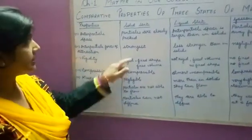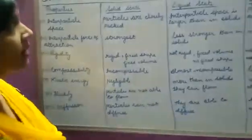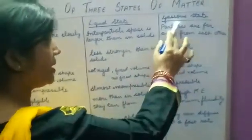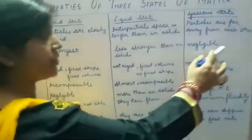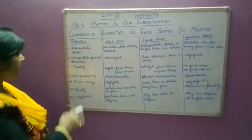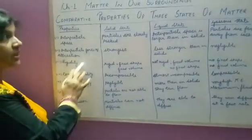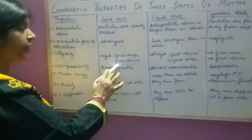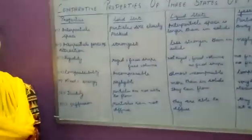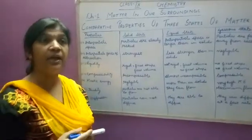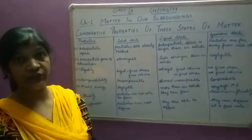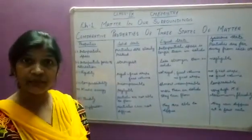The second property is inter-particle force of attraction. It is the strongest in solid state. In liquid state, it is less strong than in solids. In gaseous state, inter-particle force of attraction is negligible. The third property is rigidity. Solids are generally rigid — they have a fixed shape and fixed volume. Some solids can change their shape on applying force, but on removing force they can regain their original shape. For example, a rubber band.